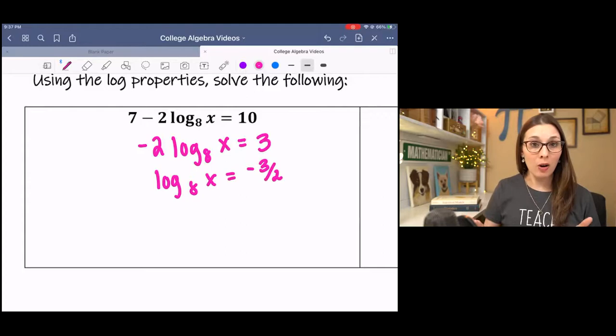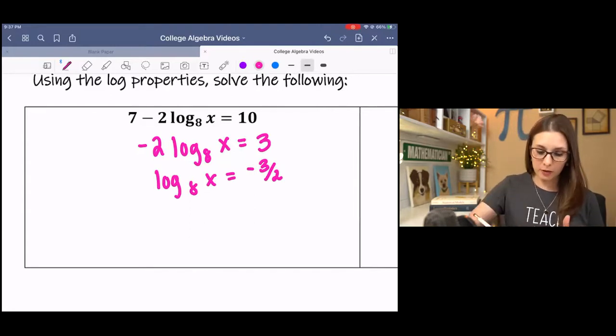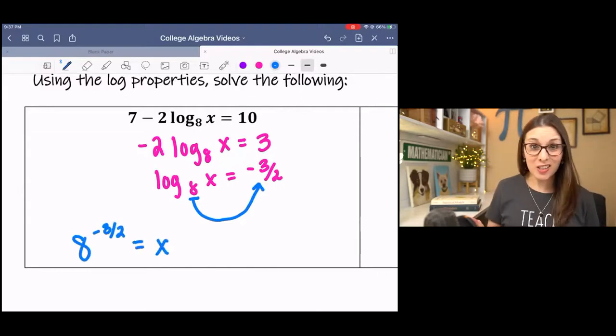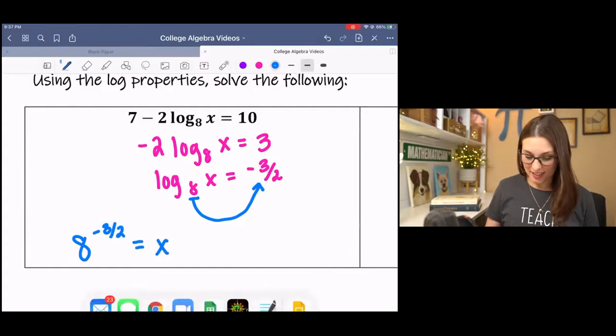And now we have a situation where we can actually convert to exponential form, or we can use the change of base formula, whatever's easiest. I'm going to convert to exponential form. That's where you start with the base, raise it to the exponent, and that equals x. And then you just type that in. Isn't that so wonderful?